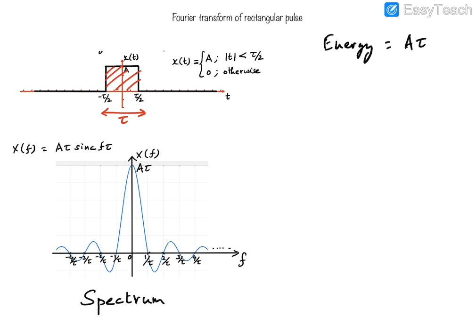The spectrum has zero crossings at integer multiples of 1 over tau — so we have zero crossings of this sinc function at 1/tau, 2/tau, 3/tau, 4/tau, and so on. The spectrum of the rectangular pulse has zero crossings at integer multiples of 1/tau.